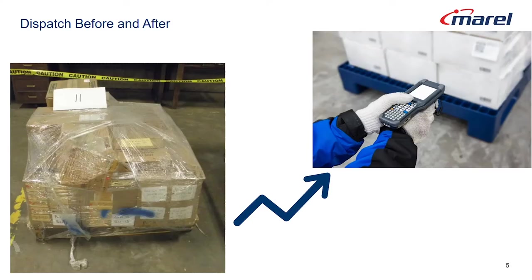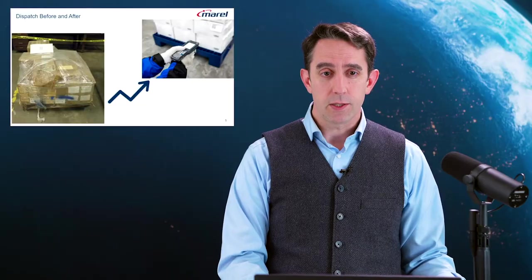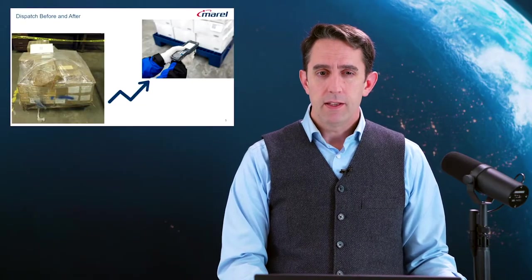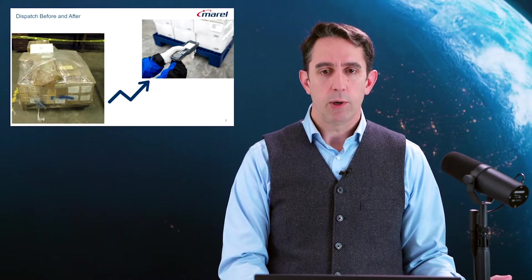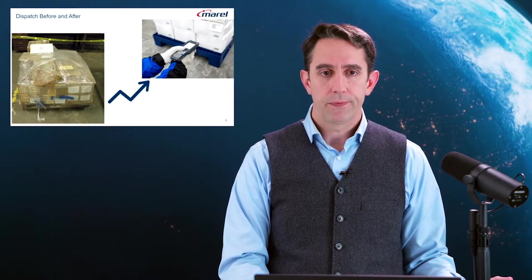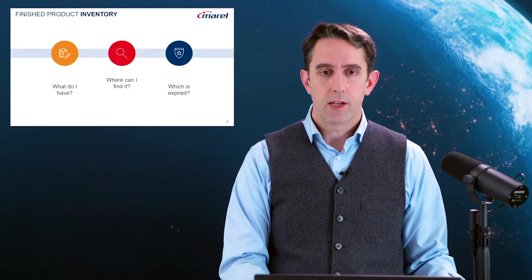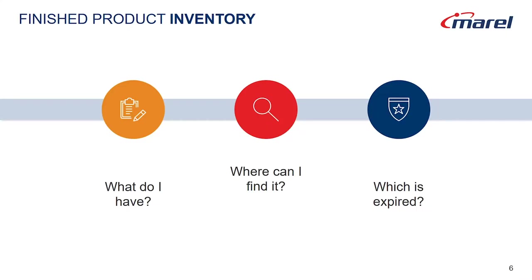In the dispatch webcast, we discussed how we can use software to achieve visibility over getting the products assigned to customers and out the door. This covers our right customer, right time, and every time component. The next piece of the puzzle is inventory.